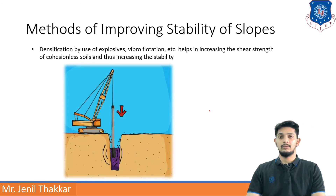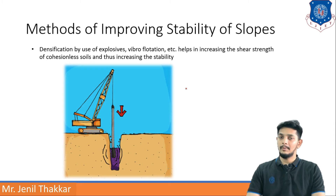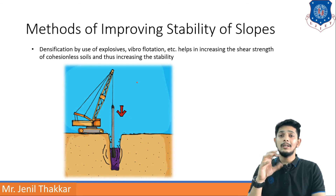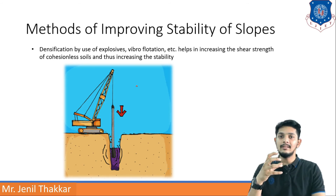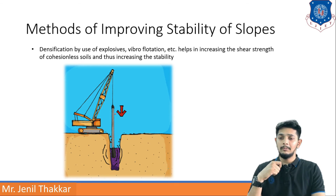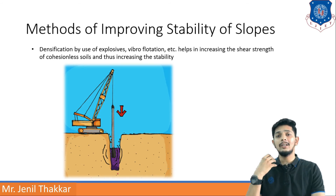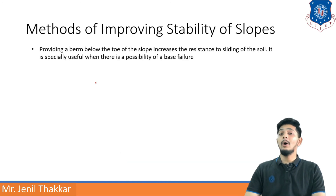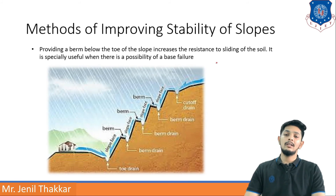Densification by use of explosives, vibroflotation, etc., helps in increasing the shear strength of cohesionless soils and thus increasing stability. Using explosives compresses the surrounding soil, making it more dense. Vibroflotation uses a crane to insert a vibrator machine into the soil; the vibration fills the soil pores, making the soil more stable.